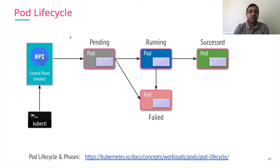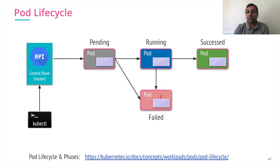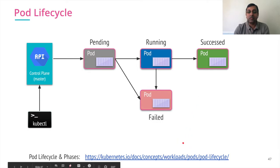Let's look at the pod lifecycle. Once the client requests a new pod to be created, the pod first goes into the pending state. The scheduler assigns a node for the pending pod. Once the node picks it up, it starts the container and goes into the running state. If for any reason it can't be allocated or run, it goes into the failed state. From the running state, it can go to either a failed or succeeded end state. You can read more about lifecycle and phases on the Kubernetes documentation, but at a high level: pending, running, then either fail or succeed.